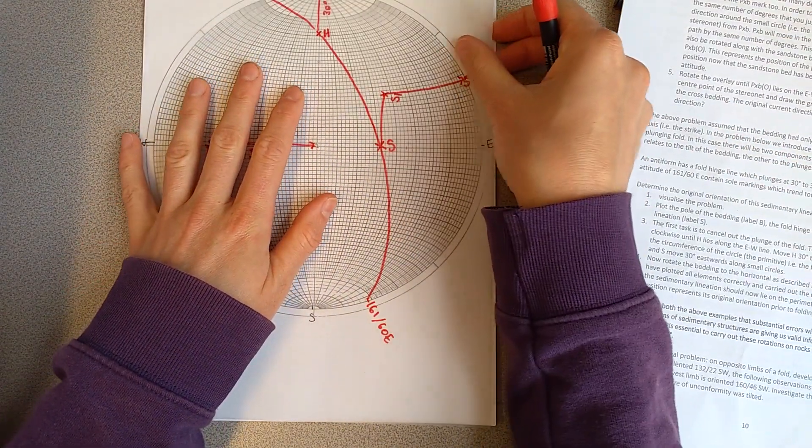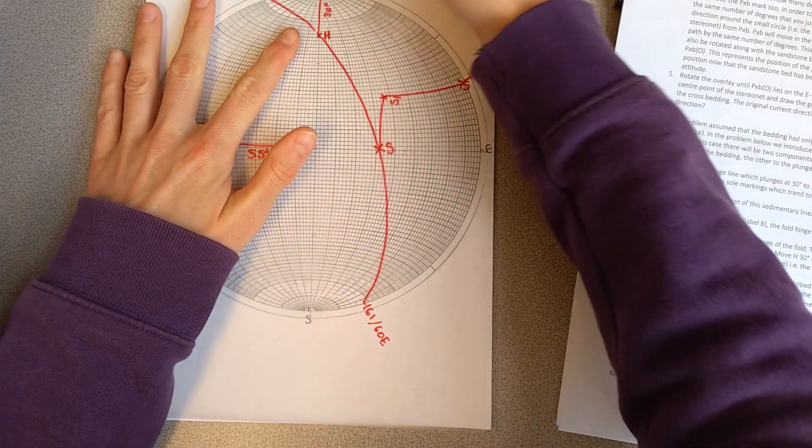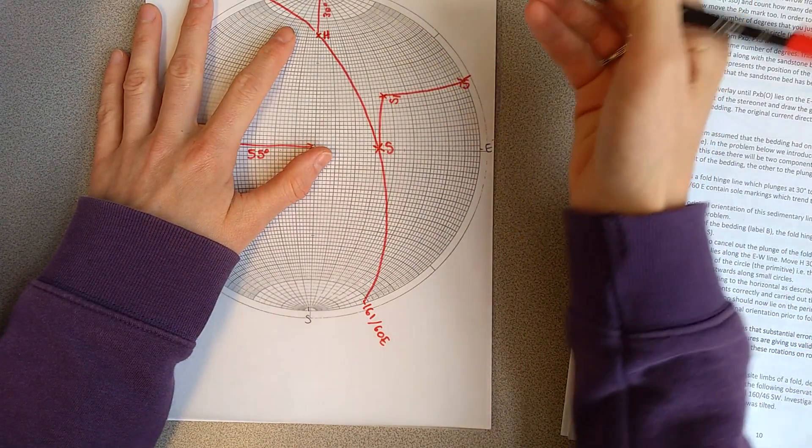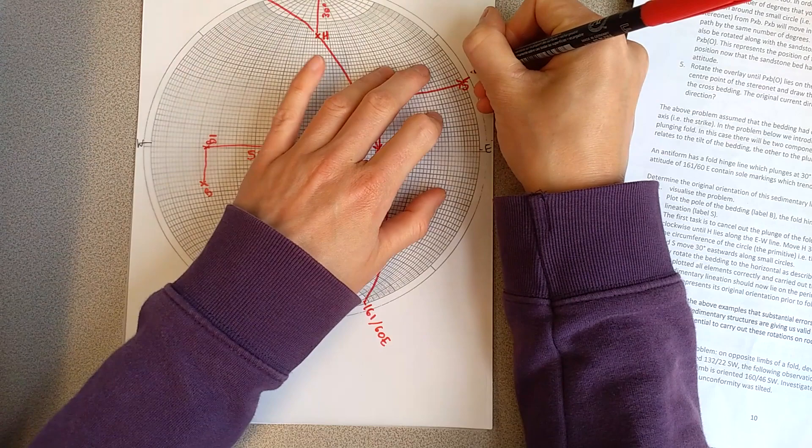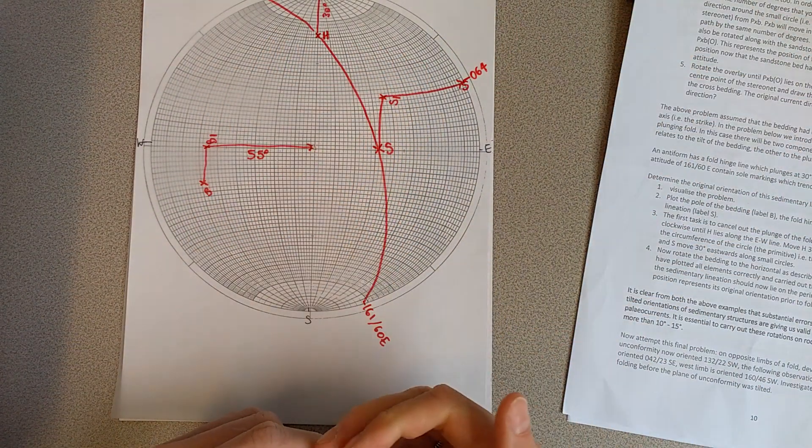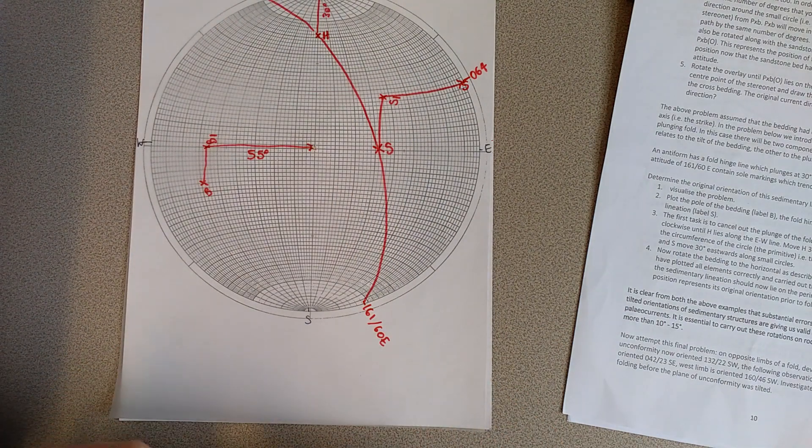And so what we can do now is we can look at that original orientation of those sole marks just by counting around. So looking at the azimuth, which they're pointing at, which here is zero, six, four. So that would be the original sole mark trending direction before the beds were both folded and tilted.